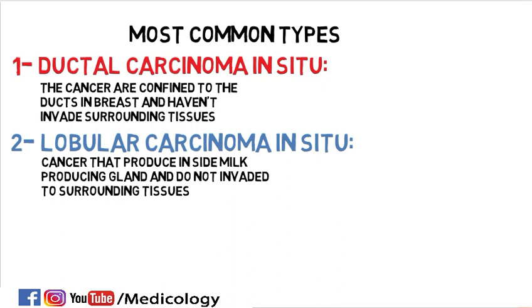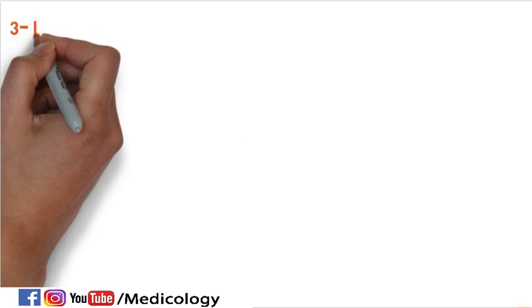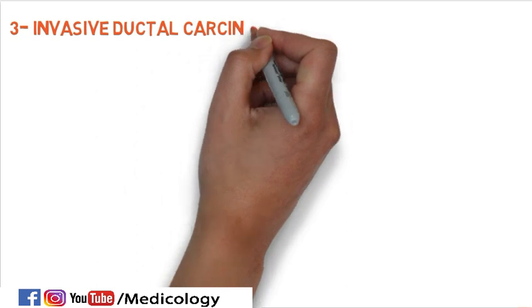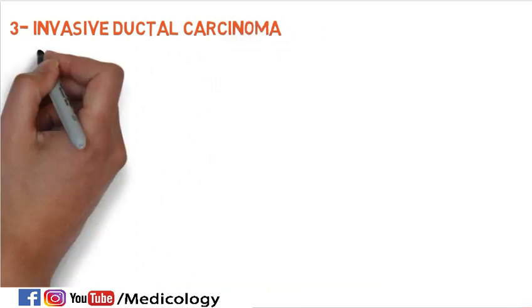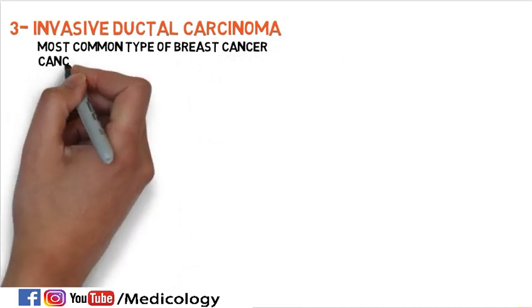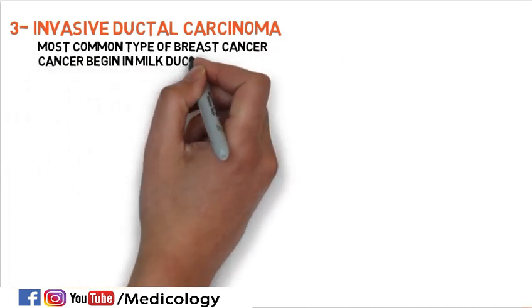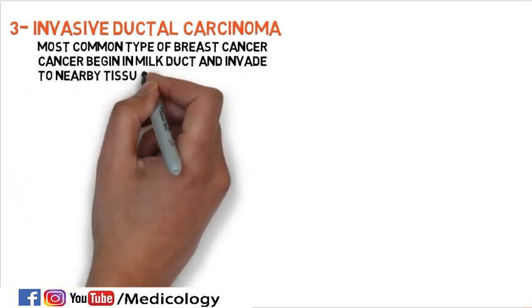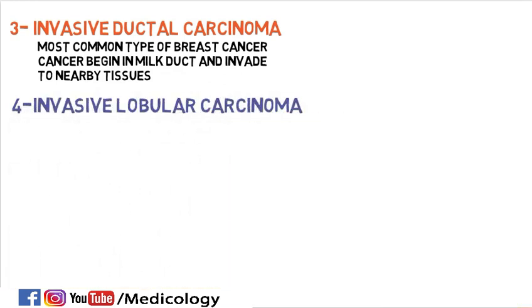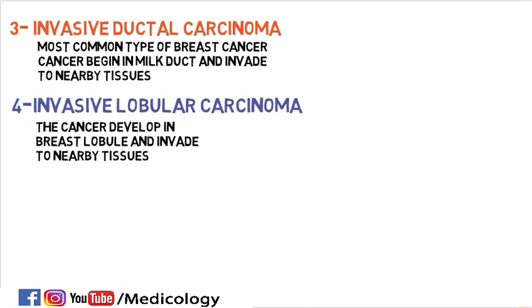Number three, invasive ductal carcinoma — this is the most common type of breast cancer. Cancer begins in the milk ducts and invades the nearby tissue. Number four, invasive lobular carcinoma — the cancer develops in the breast lobules and has now invaded the nearby tissues.